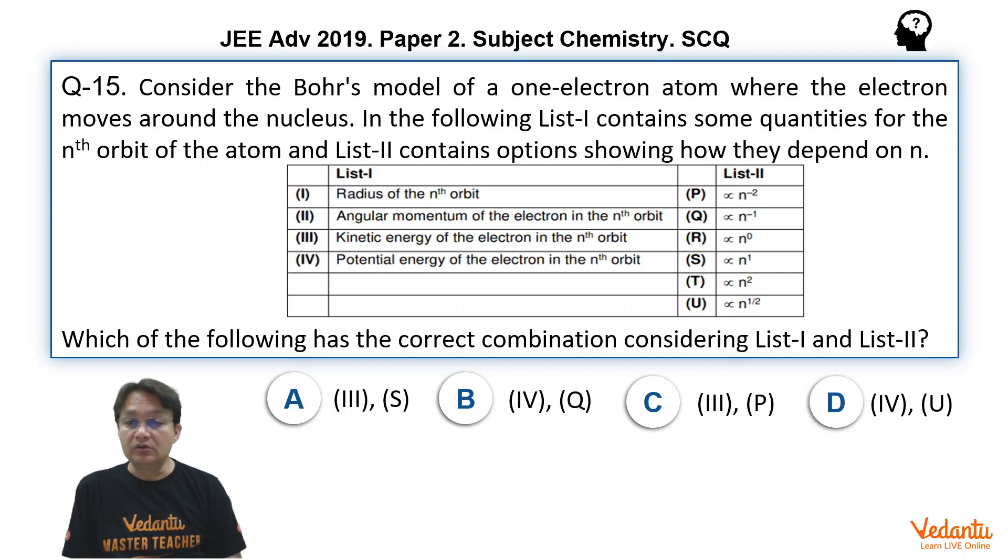And the list two have been given proportional to n, proportional to 1 upon n, proportional to n raised to the power 0, and n square, 1 upon square root of n, square root of n, option u. And now we have to see which of the following correct combinations considering list one and list two is correct.